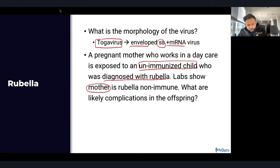Other structures draining into the superficial inguinal lymph nodes include the lower two-thirds of the vagina (derived from the urogenital sinus, not Müllerian) and the rectum below the dentate line (ectoderm, superficial). The rectum above the dentate line drains into the internal iliac. Internal structures like the prostate also drain into the internal iliac, which then drains into the common iliac, then para-aortic, then cisterna chyli, then the thoracic duct.